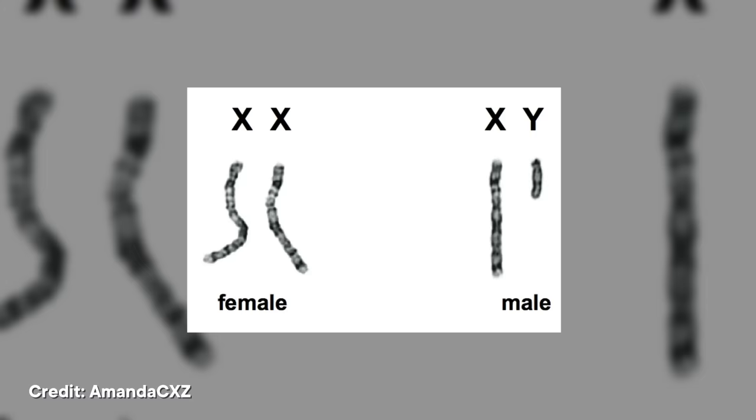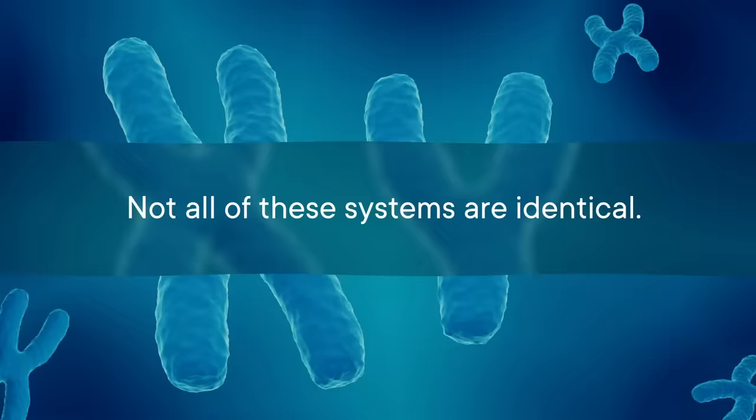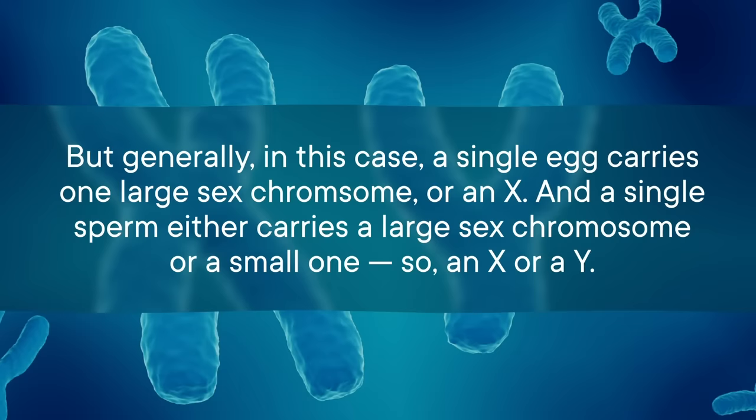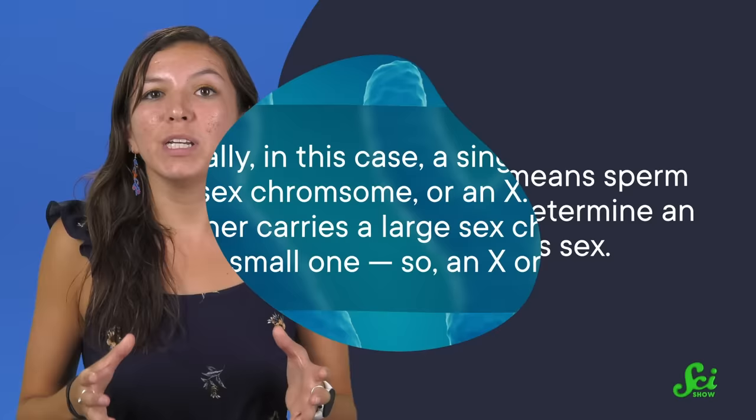Since 1905, we've learned a lot more about just how variable sex determination actually is. The most talked-about system is the XX and XY one, which humans, most other mammals, and lots of insects use. Scientists think X's and Y's probably evolved independently in several species. Generally, in this system, a single egg carries one large sex chromosome — an X — and a single sperm either carries a large sex chromosome or a small one, so an X or a Y. This means sperm cells determine an animal's sex: if an egg is fertilized with a Y-carrying sperm, the offspring will be XY and male; if fertilized with an X-carrying sperm, it will be XX and female.